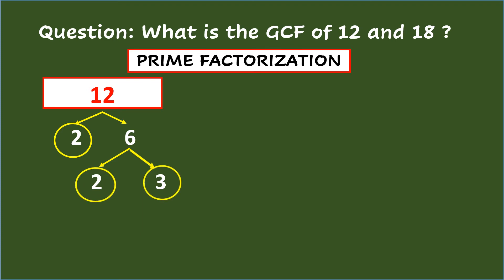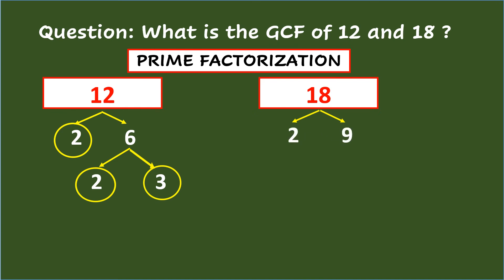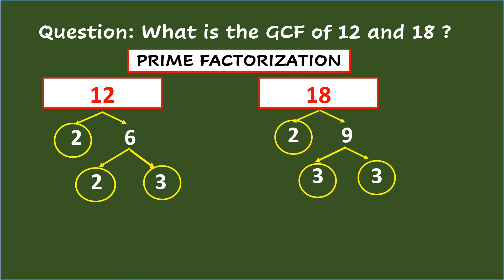2 and 3 are prime factors, so you will stop factoring. For the number 18, a pair of factors using the smallest prime number is 2 times 9. Since 2 is already a prime factor, you will leave it. While 9 is not yet prime, so you will continue factoring 9 as 3 times 3. Since 3 and 3 are already prime numbers, you will now stop factoring.